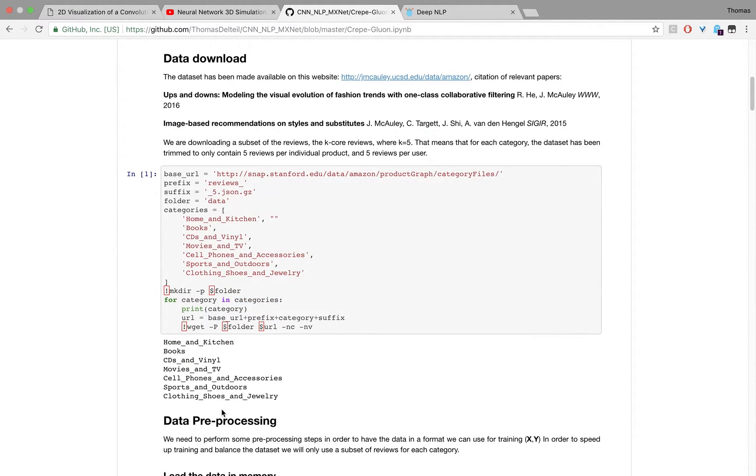We first go through the data download. The task at hand is to classify reviews of Amazon products in order to try to guess what type of product it was about.